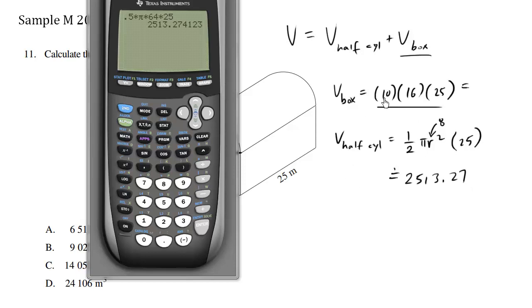Now let's work out this volume of the box. We have 10 times 16 times 25. This here is 4,000.